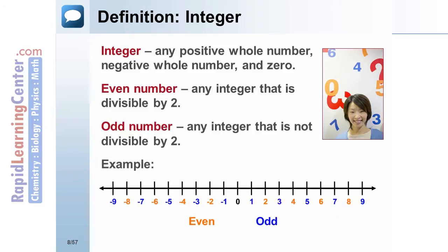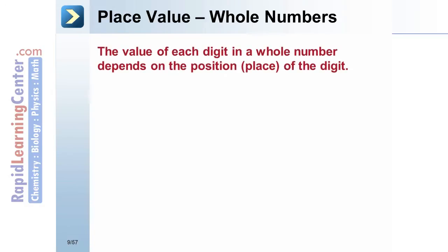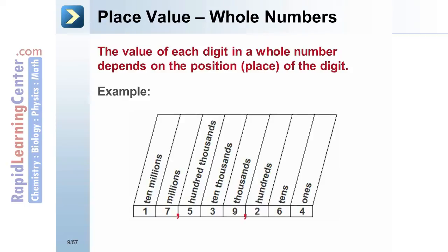Even and odd numbers alternate on the real number line: one is odd, two is even, three is odd, four is even, and so on. The value of each digit in a whole number depends on the position or place of the digit within the number. For example, in 17,539,264, the value of the three is three times ten thousand, or thirty thousand — three is in the ten-thousands place.